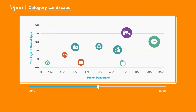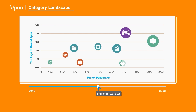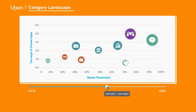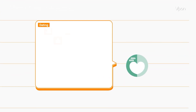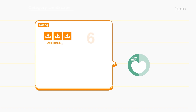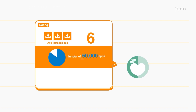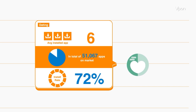Plan seasonal and short-term strategies based on the changing market landscape. Know where your potential audiences are with insightful data in each category. For example, how many dating apps each user has on average, or how many apps there are in the dating category, and, more interestingly, how these numbers change over time.